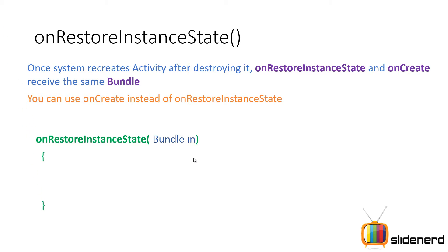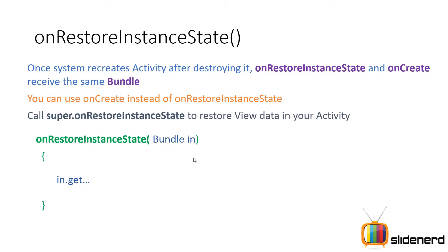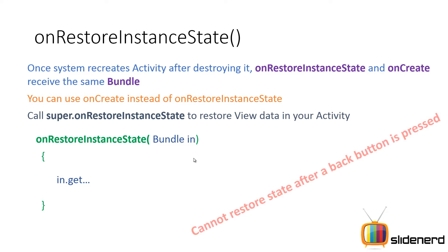You just need to get that information out by calling getInt, getString, getBoolean, whatever is appropriate. And again, call super.OnRestoreInstanceState — just the way you restore your information, Android also needs to restore information for views like EditText, Button, TextView, and so on. So make sure you call the super class implementation of OnRestoreInstanceState. And remember, you cannot restore state after the back button is pressed.